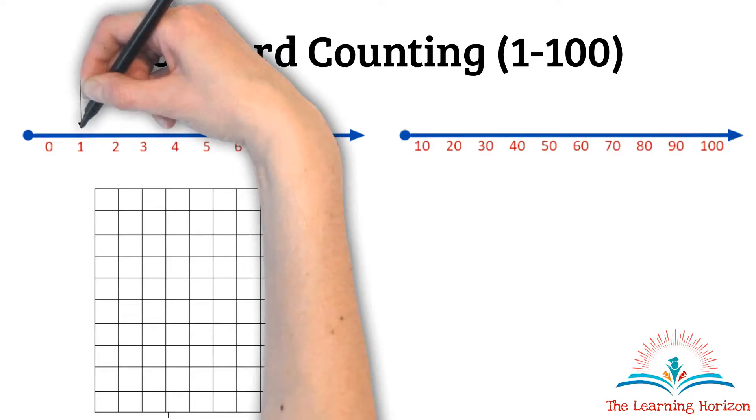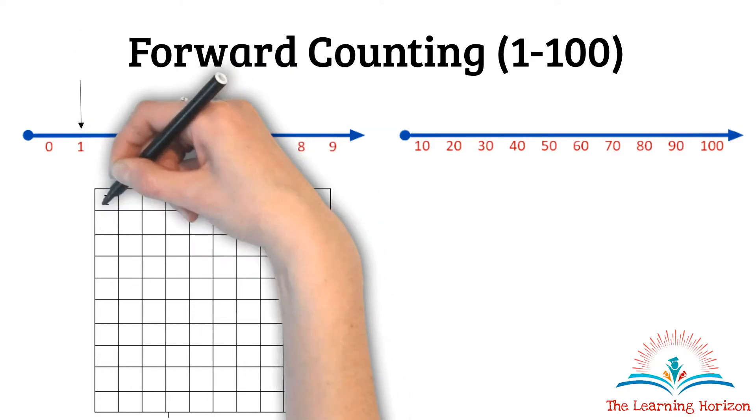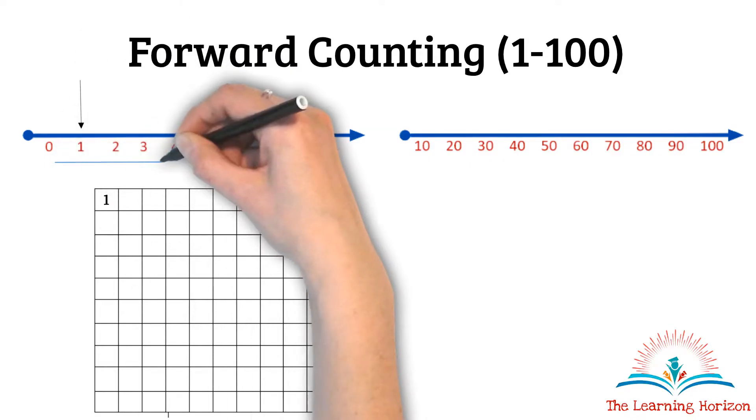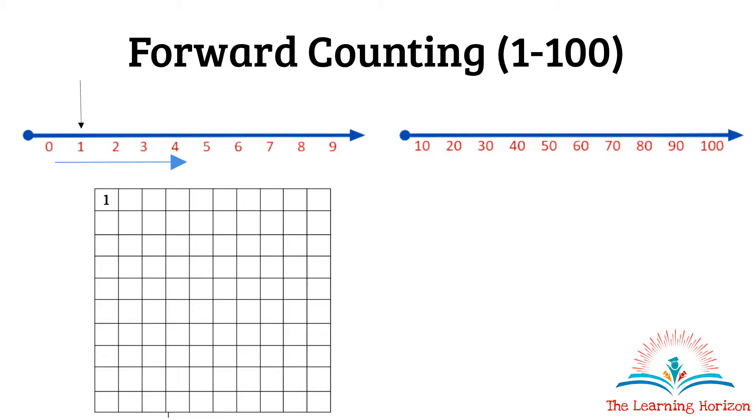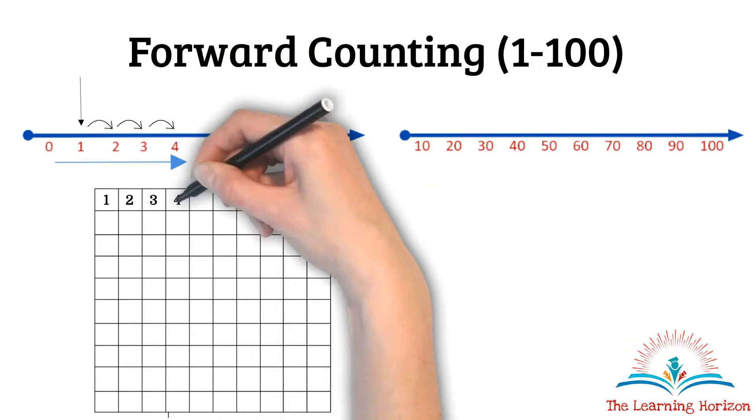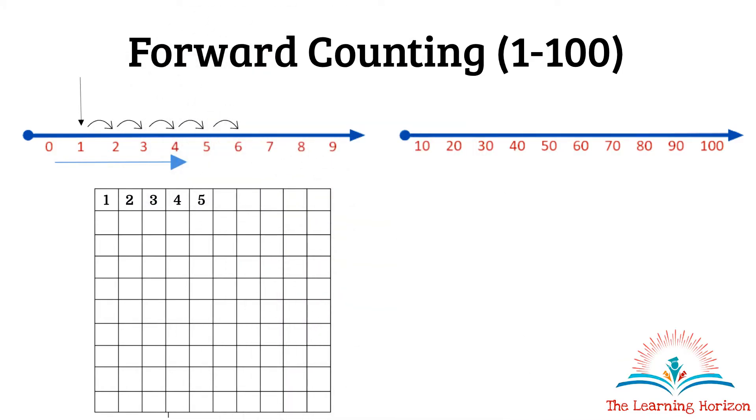We will begin counting from 1 and we will follow the same order as shown in the number line here and count on till 9: that is 2, 3, 4, 5, 6, 7, 8 and 9. Now we have reached the end of the first number line because we don't have any digits after 9.